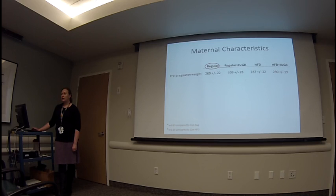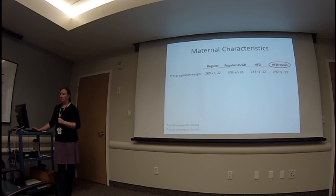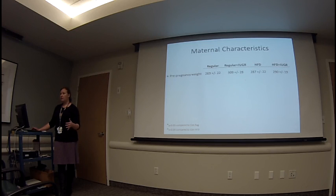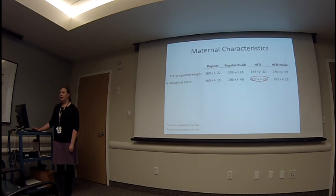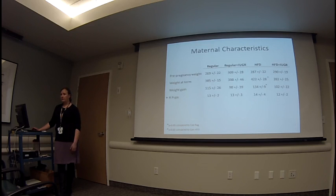The data are shown for four groups: regular diet controls, regular diet plus IUGR surgery, high-fat diet, and high-fat diet plus IUGR surgery. When we look at pre-pregnancy weight, there's no difference between these groups. But the high-fat diet-consuming moms ended up gaining more weight by term gestation, so their weight at term and their overall weight gain were higher — and that occurred despite having the same number of pups per litter compared to the other control groups.